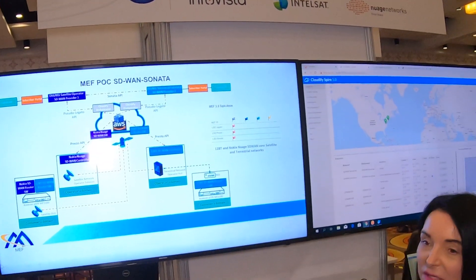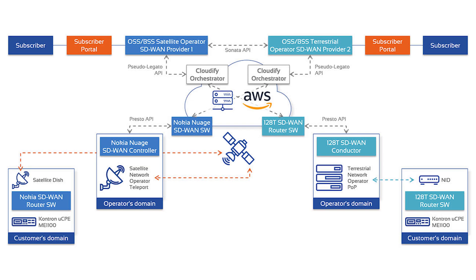This is the basic architecture. For example, if we had a subscriber on our CMC terrestrial network wanting a B-end in a remote location, that request would be interrogated via Sonata onto the IntelSat satellite network, and if that location was on the IntelSat network, that confirmation would then be sent via Sonata back to the CMC customer to say yes, we have the B-end in our location.